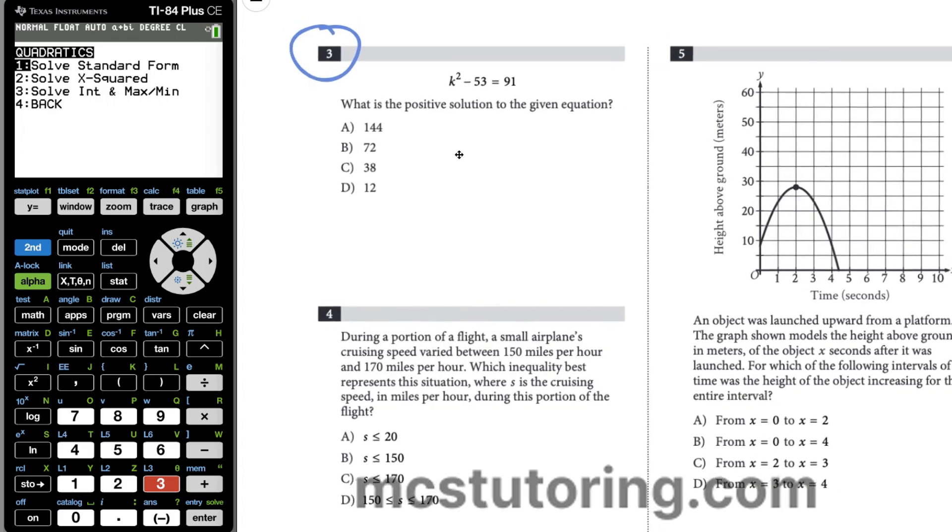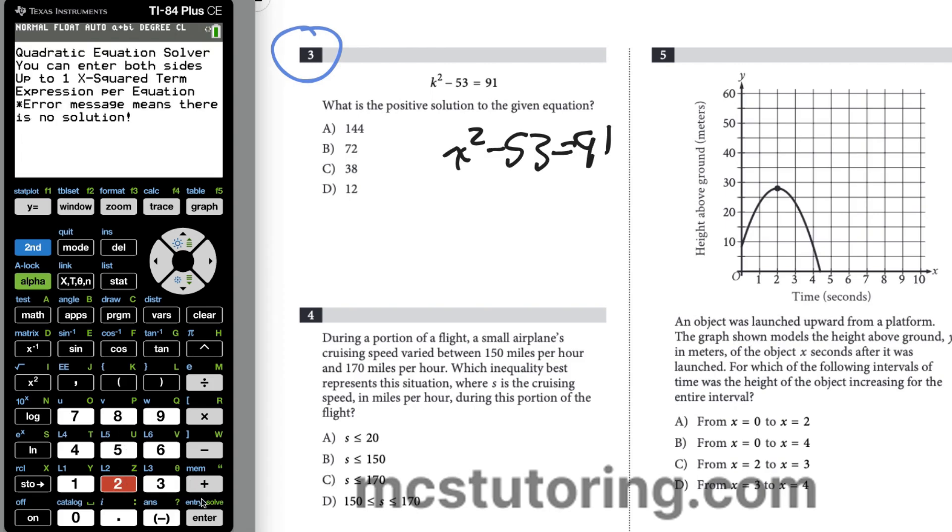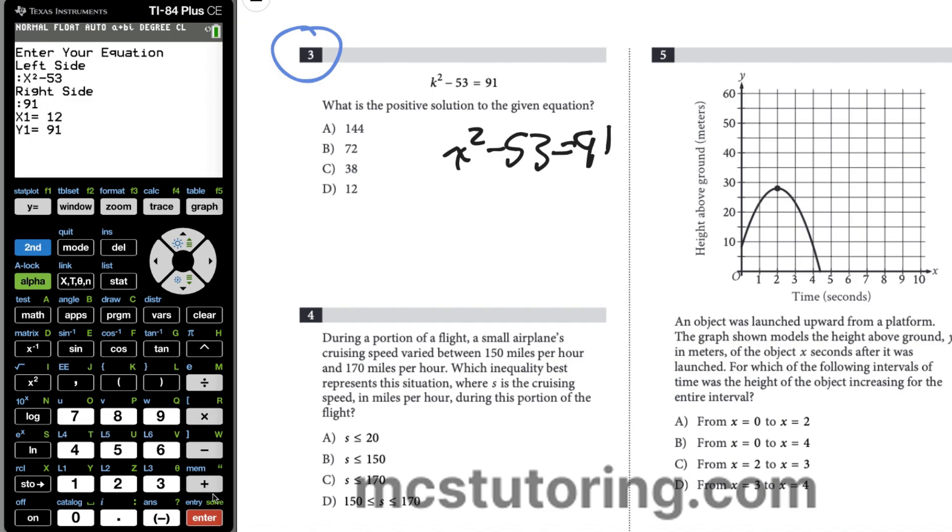Instead of using K squared, it's going to be X squared minus 53 equals 91. We're going to do option 2 for the quadratic, solve X squared. There's some warning messages here because you don't want to have X squareds on both sides. We're going to have the X squared, and the squared key is right here, upper left from the 7 key. Then minus 53, that's the left-hand side. The right-hand side is 91.